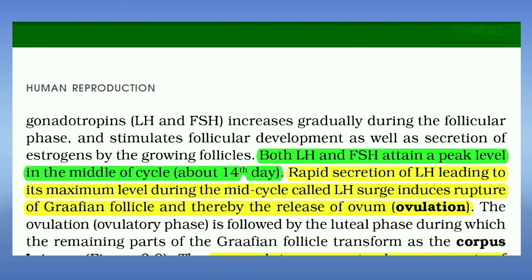Both LH and FSH attain a peak level in the middle of the cycle, around the 14th day. Rapid secretion of LH leading to its maximum level during the mid cycle, called the LH surge, induces rupture of the Graafian follicle and thereby the release of the ovum, called ovulation.